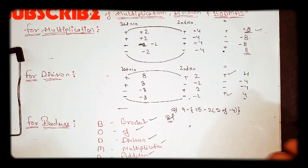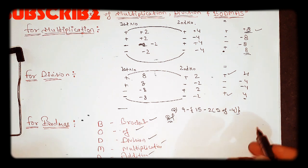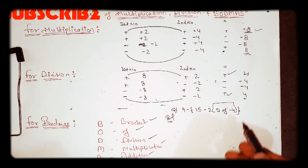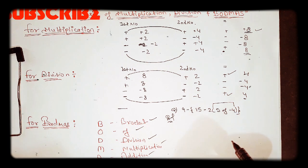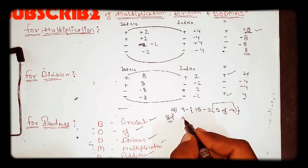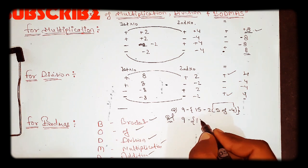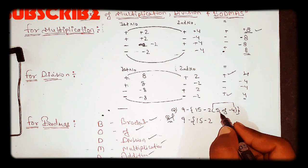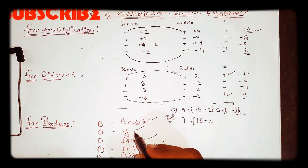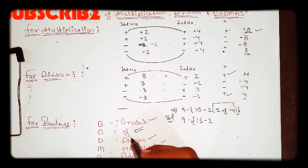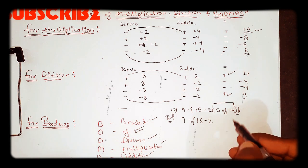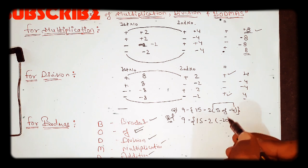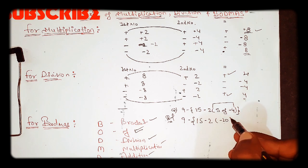For example: 9 minus, in bracket, 15 minus 2 in bracket 5 off minus 4, brackets closed. This inner bracket is solved first. So we get 9 in bracket, then we solve the 'off' part: 5 into 4 equals 20. This is negative, so we get minus 20.